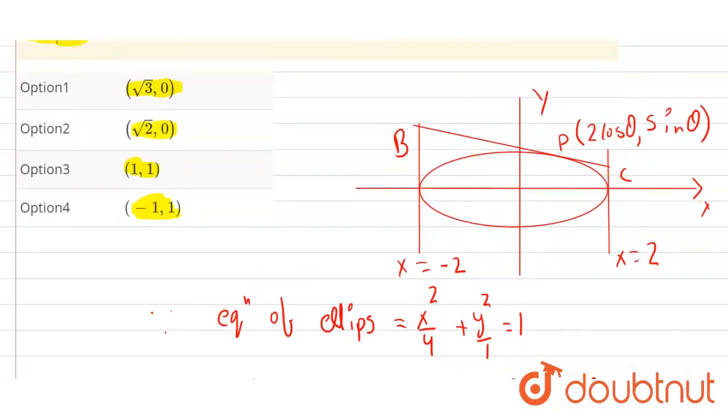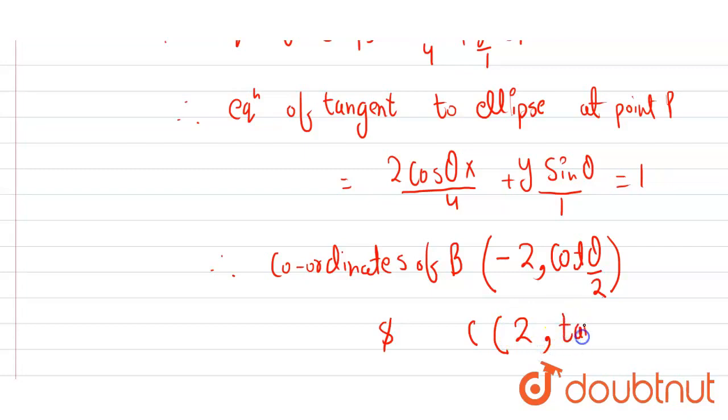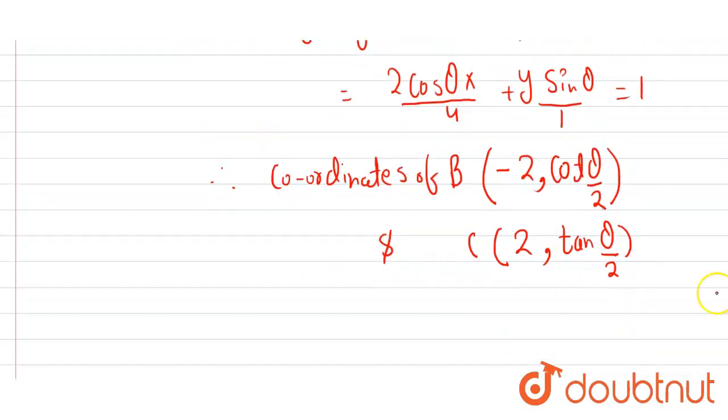Therefore, we can write the coordinates of B will be minus 2 cot theta upon 2. And C coordinates will be similarly 2 tan theta upon 2. These are the coordinates of B and C.